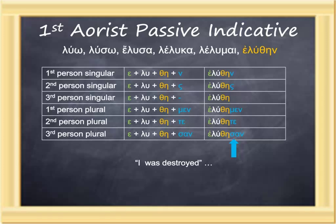Those forms would be translated in order: I was destroyed; you singular were destroyed; she, he, or it was destroyed; we were destroyed; you plural were destroyed; they were destroyed.